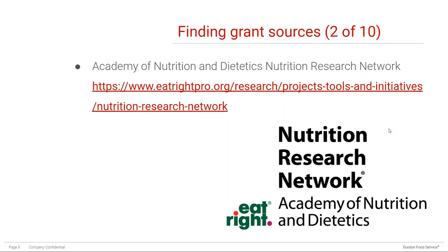The Academy's Nutrition Research Network conducts, supports, promotes, and advocates for practice-based research to answer questions important to dietetics practice. Network members are registered dietitians and nutritionists working in a variety of practice settings, including practitioners, researchers, and students. Membership is open and free to all Academy members. To join, simply email nrn@eatright.org with 'join' and your member number in the subject line. I encourage you to join because it emails periodic updates including funding and fellowship opportunities — for example, the July 2020 update provided links to five grant sources.